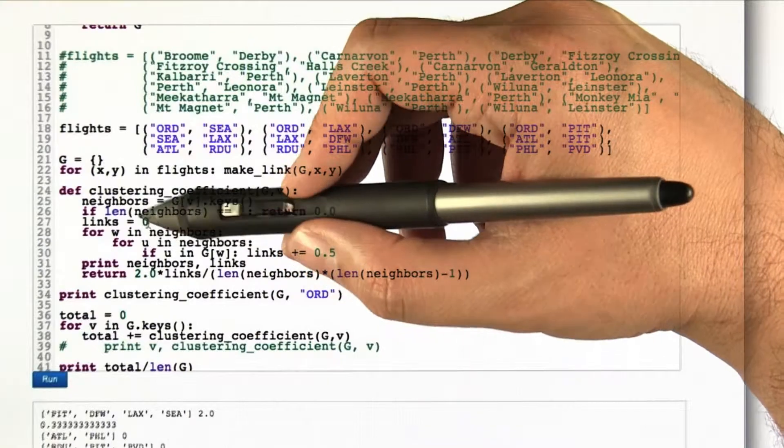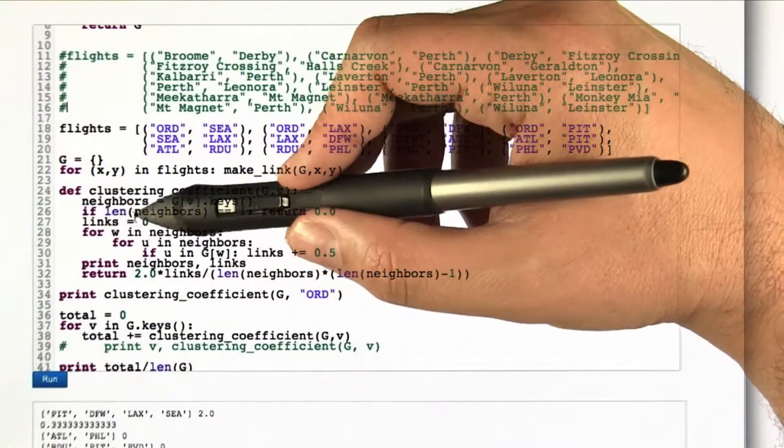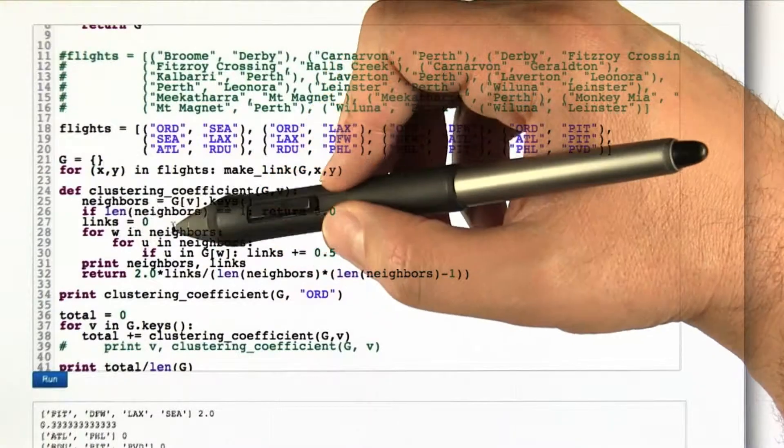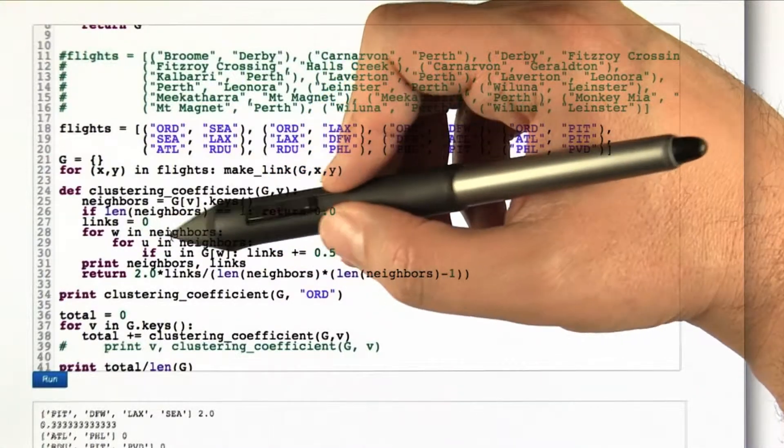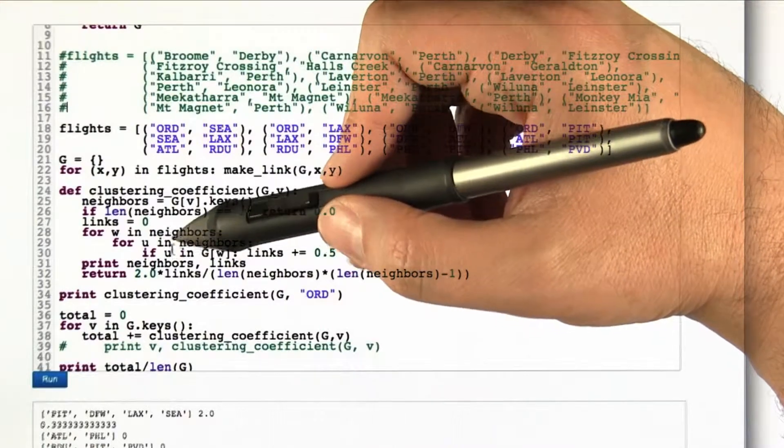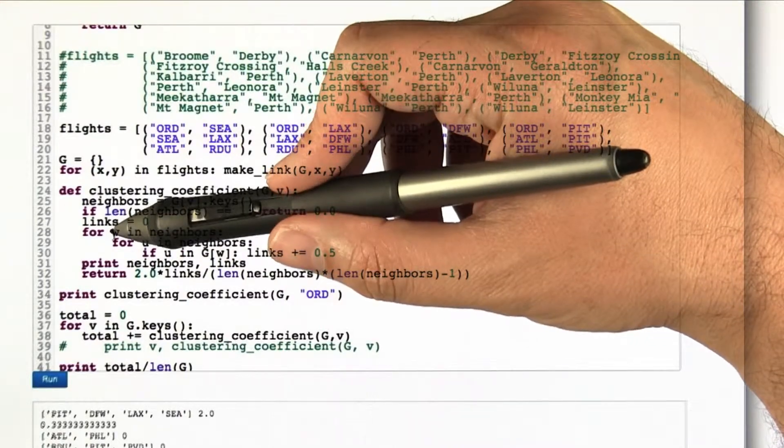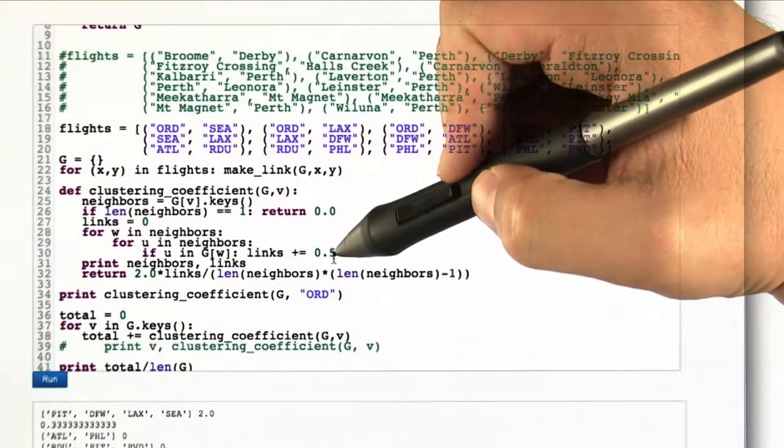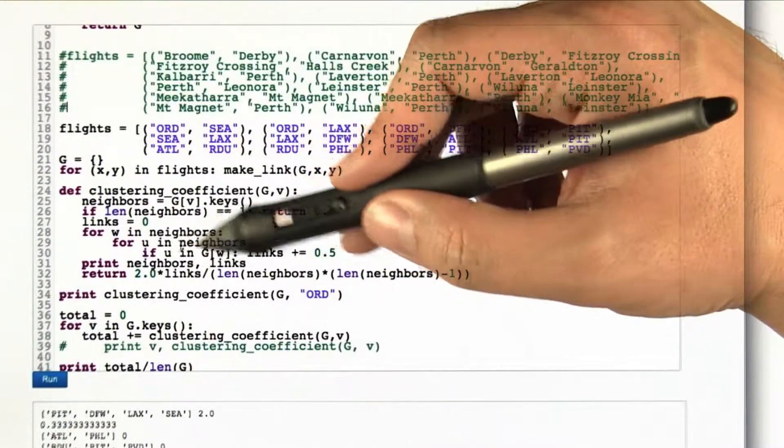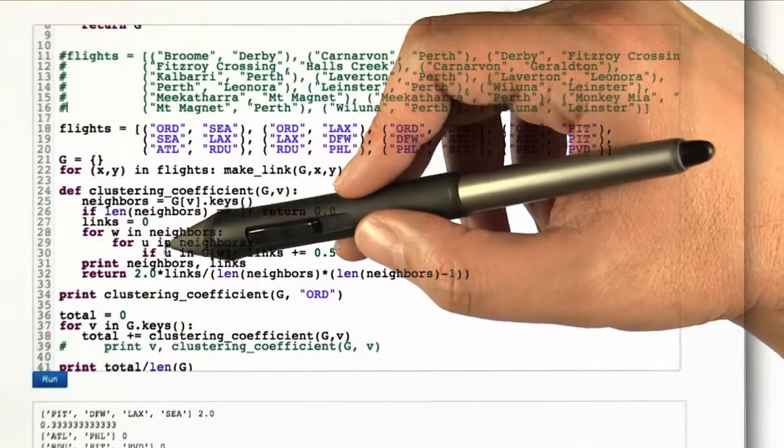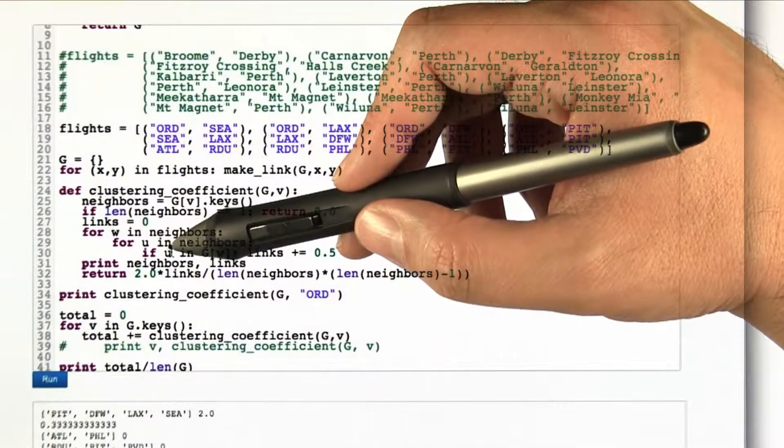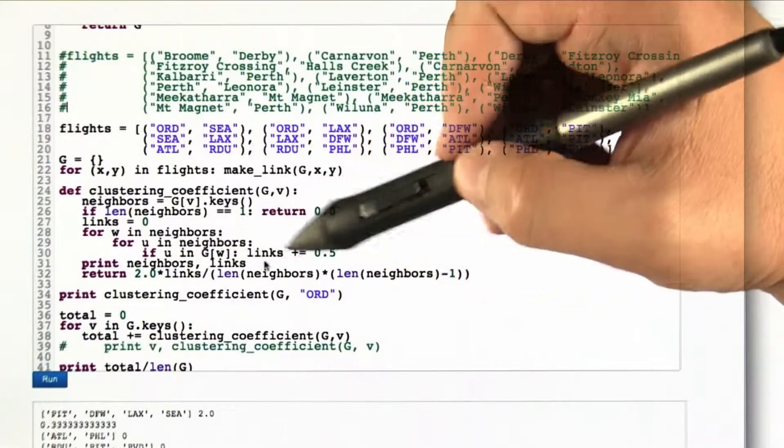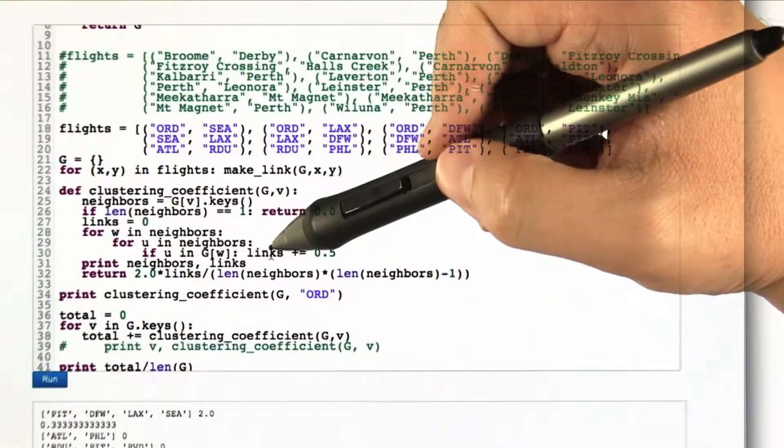Then what we're going to do is count up the number of links between these neighbor nodes. So we start that off at 0. We loop through all the neighbors, and for each of those, we loop through all the neighbors again. And then we ask, is this pair w, u, is there a link between them? And if so, in this case I'm counting it as a half because I wrote this inefficiently. It's going to do everything twice. So it's going to notice that Seattle and Los Angeles are connected and that Los Angeles and Seattle are connected. So I give it a half each time so that the total number works out.